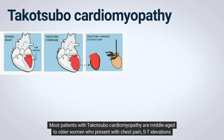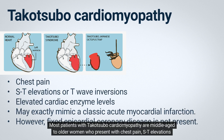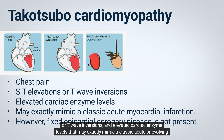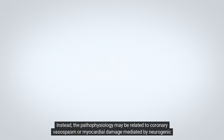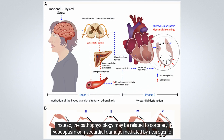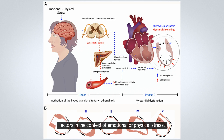Most patients with Takotsubo cardiomyopathy are middle-aged to older women who present with chest pain, ST elevations or T wave inversions, and elevated cardiac enzyme levels that may exactly mimic a classic acute or evolving myocardial infarction. However, fixed epicardial coronary disease is not present; instead the pathophysiology may be related to coronary vasospasm or myocardial damage mediated by neurogenic factors in the context of emotional or physical stress.